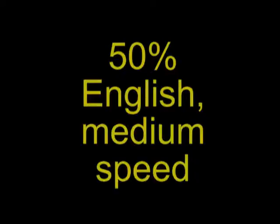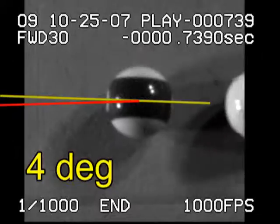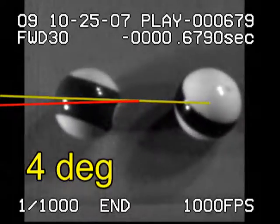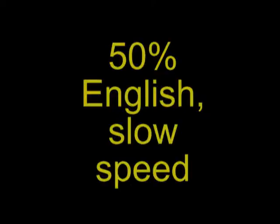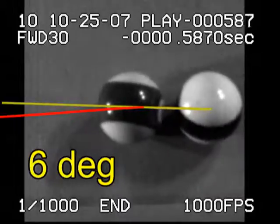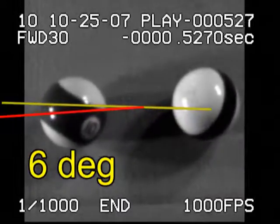Now let's look at the effects of the amount of English and the speed of the shot on the amount of throw you get. Let's start with 50% English at medium speed. Here the throw angle is about 4 degrees. With the same amount of English and less speed, we get more throw, in this case about 6 degrees.